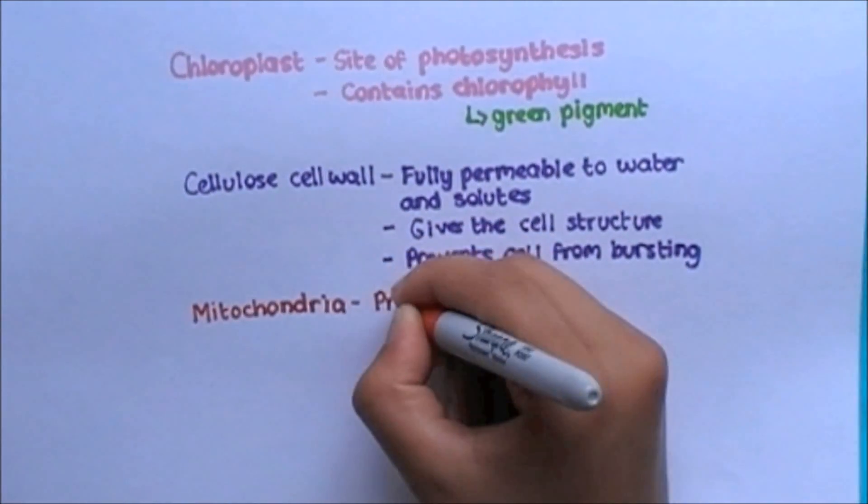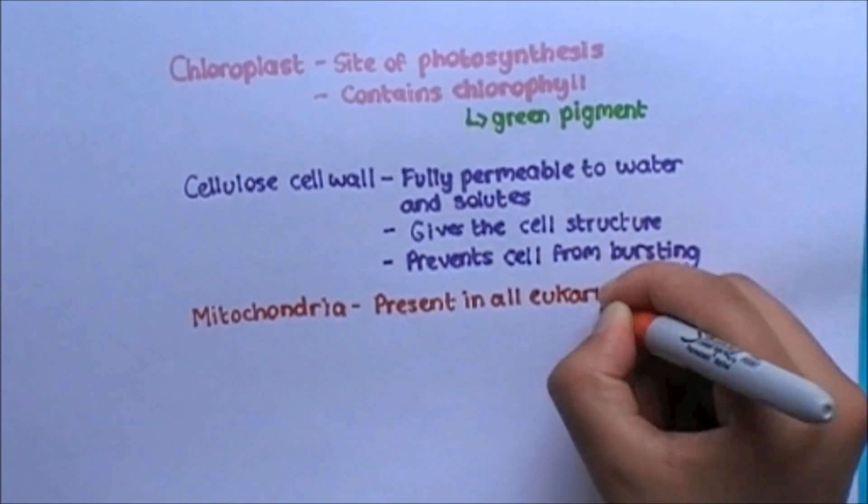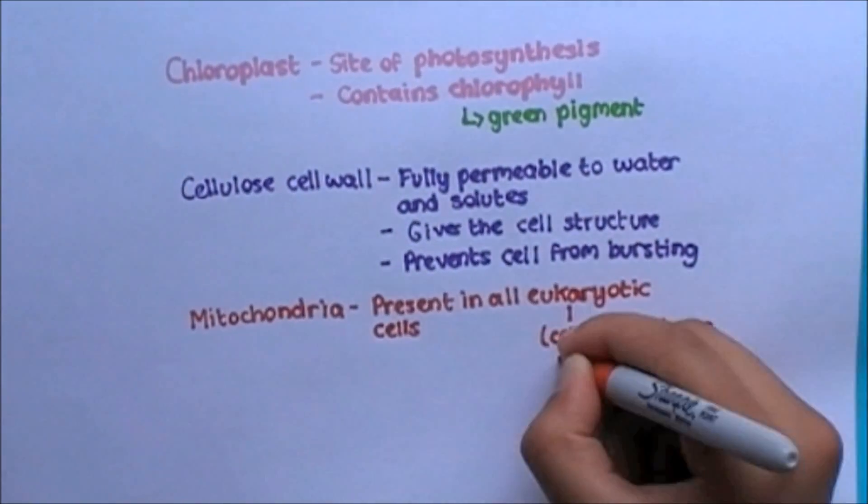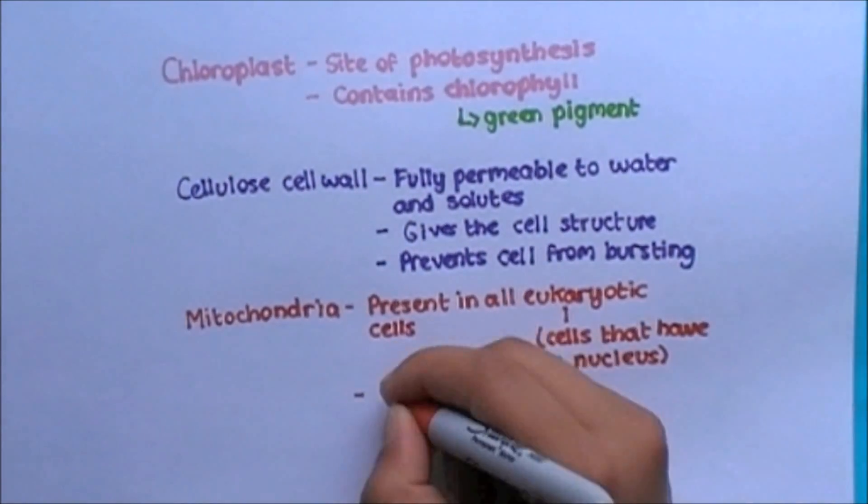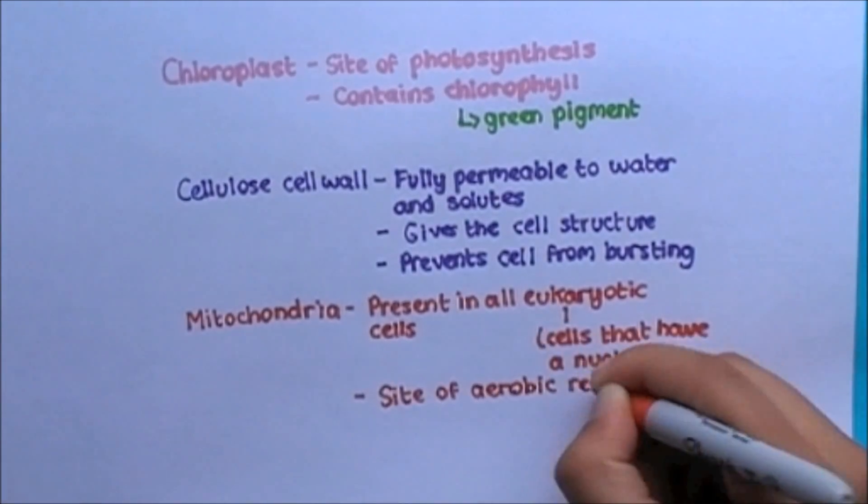Mitochondria are present in all eukaryotic cells, a technical word for cells that have a nucleus. They are the site of aerobic respiration. This is respiration with air.